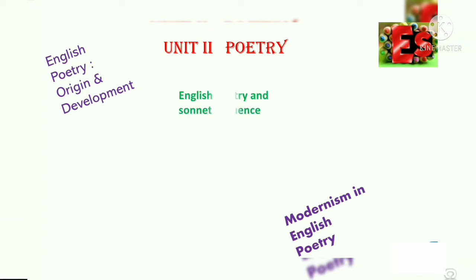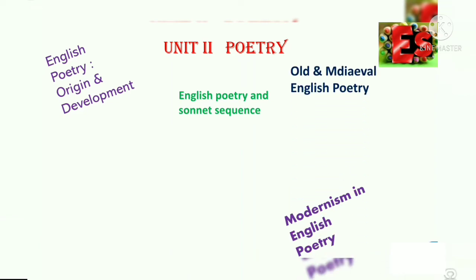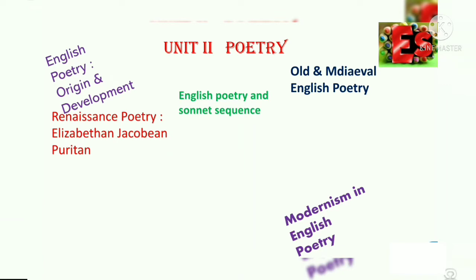Second unit is Poetry. We will see what points to cover: English poetry, its origin and development, its sonnet sequences. Old and medieval English poetry, Renaissance poetry, Elizabethan time poetry, Jacobean and Puritan era poetry, Metaphysical poetry, Cavalier poetry, and various schools of poetry.